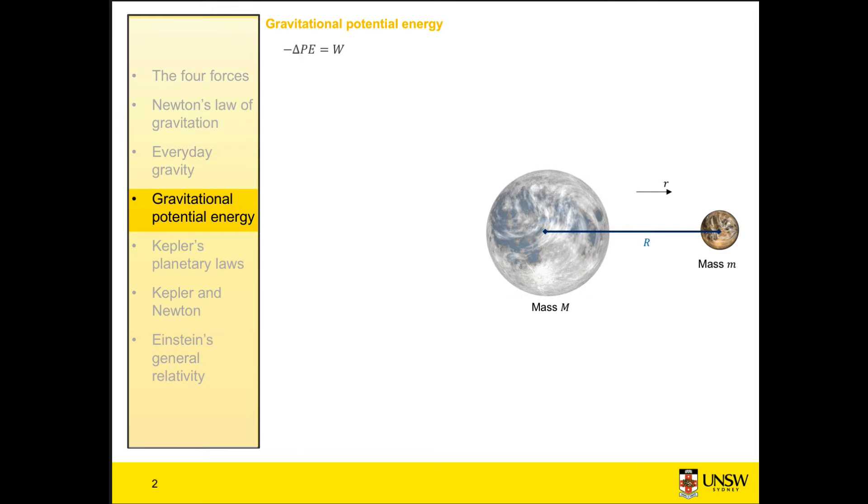What we're looking for is the potential energy of our object at a radius r, but what we have is an expression for the change in potential energy. So if we can find a point at which our potential energy is zero, then our change in potential energy between r and that point will give us the potential energy at r.